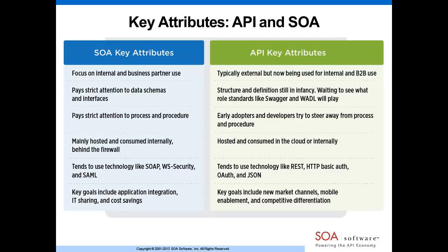Let me share a couple of slides to level-set on how we think about API and SOA convergence and why it's so important. On the left in blue you can see key attributes of SOA technology — things like focus on internal and business partner use, strictness around data models, interfaces, and processes, and working with key technologies like SOAP, WS-Security, and SAML. SOA has a lot of very important attributes that many organizations have already used to build successes.